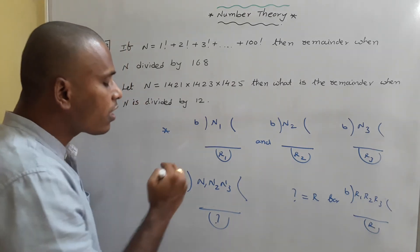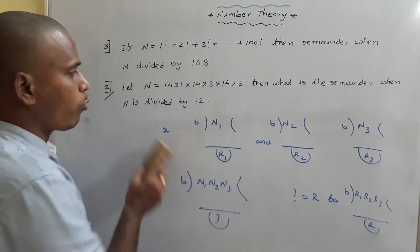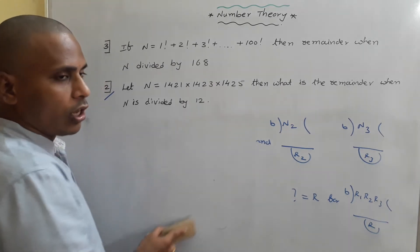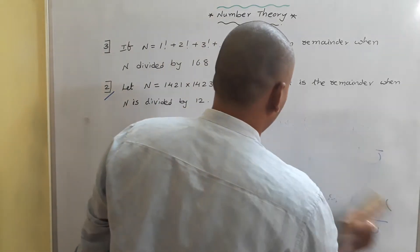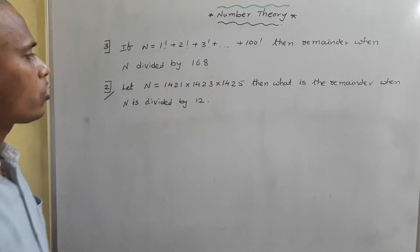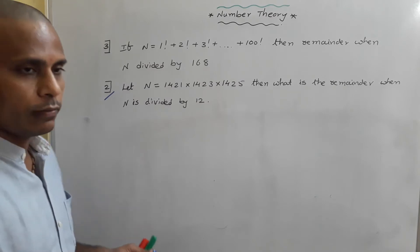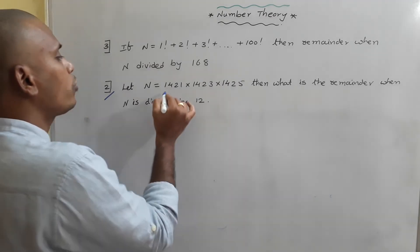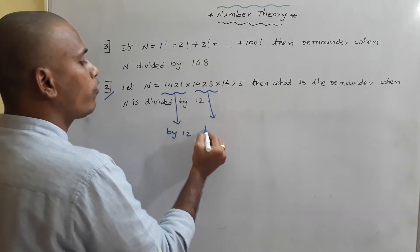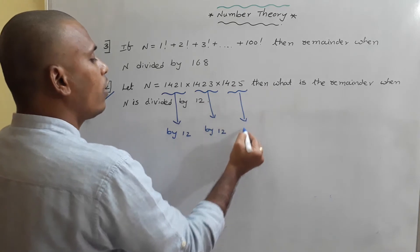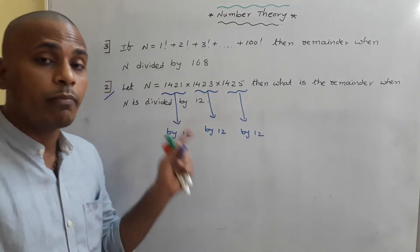This second problem is just an application of this particular property on remainders. n equals the product 1421 × 1423 × 1425. What is the remainder when this n is divided by 12? First, find the remainder when 1421 is divided by 12, then the remainder when 1423 is divided by 12, then the remainder when 1425 is divided by 12. At the end, we get the remainder when n is divided by 12.